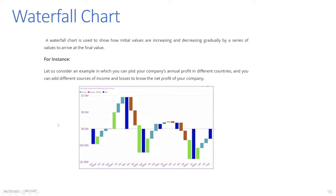Waterfall Chart: A waterfall chart is used to show how initial values are increasing and decreasing gradually by a series of values to arrive at the final value. For instance, you can plot your company's annual profit in different countries, adding different sources of income and losses to know the net profit of your company.